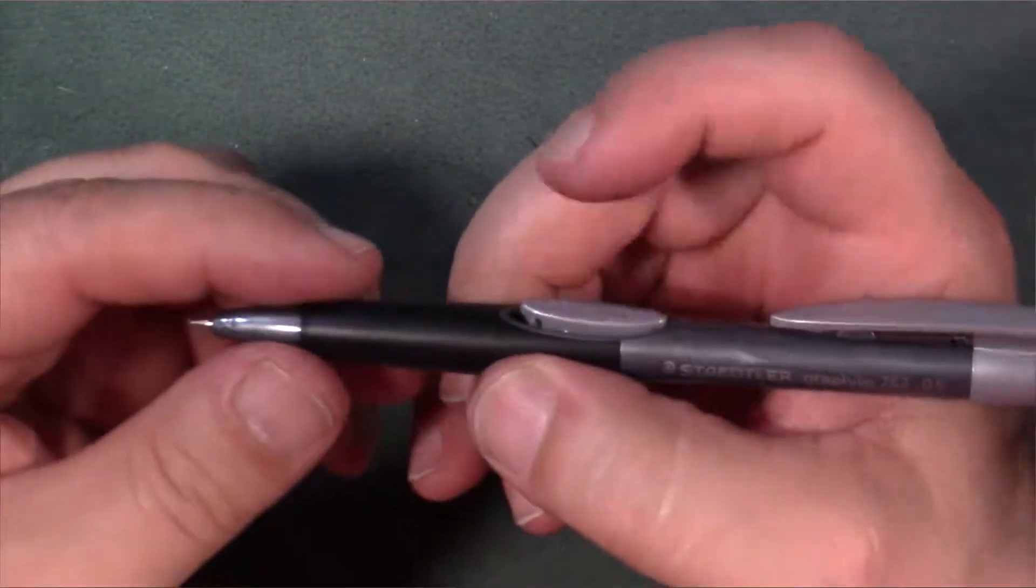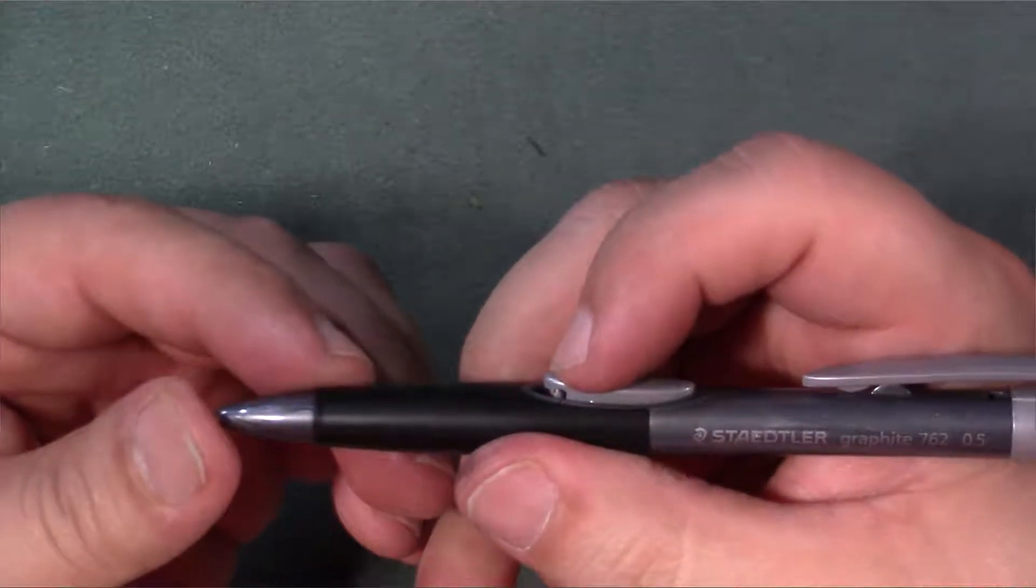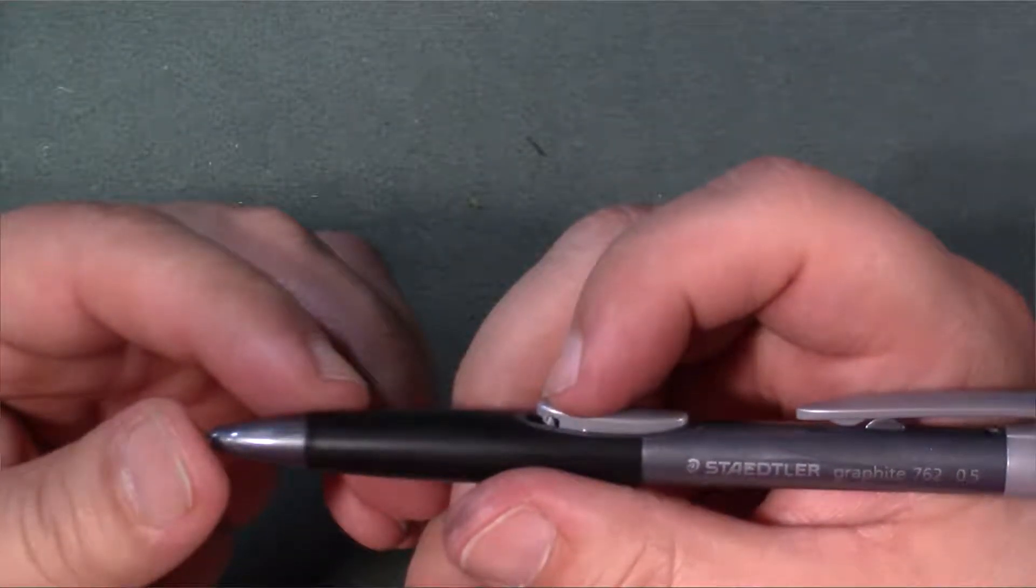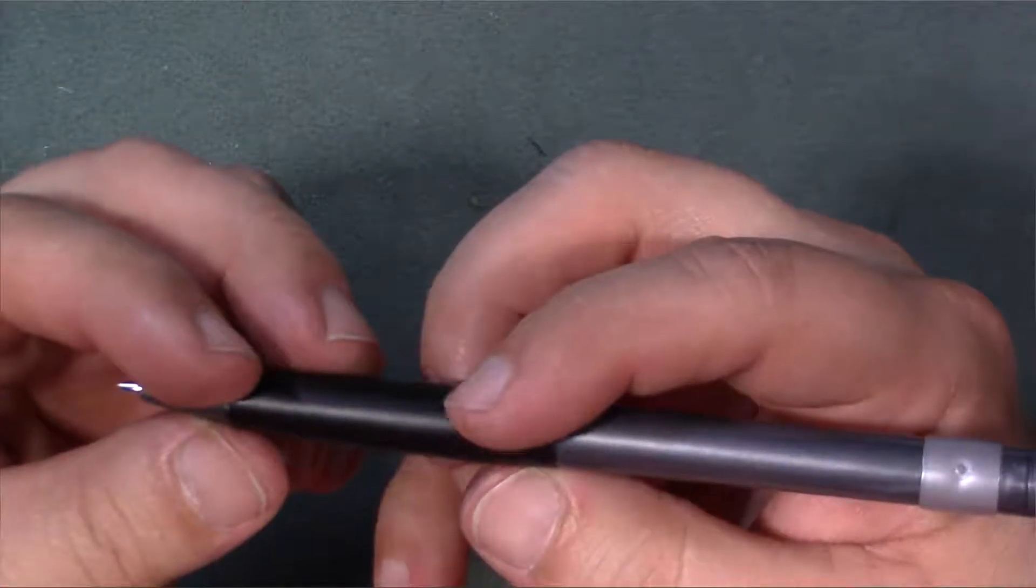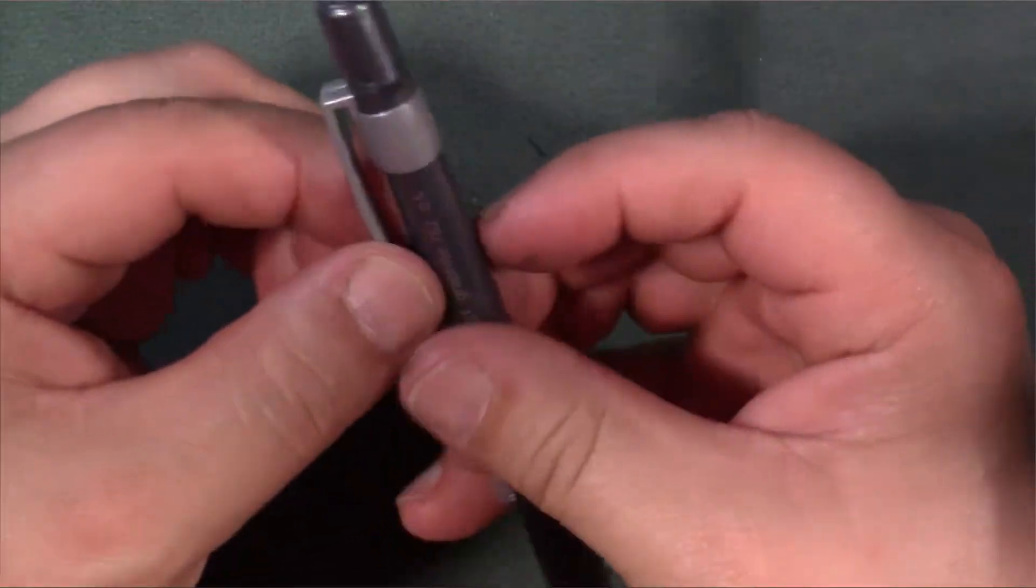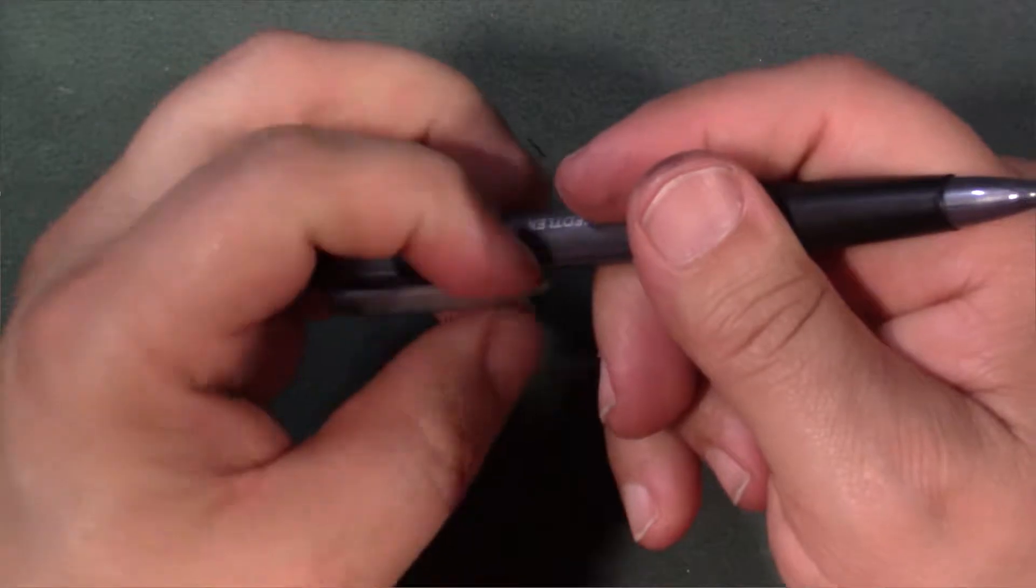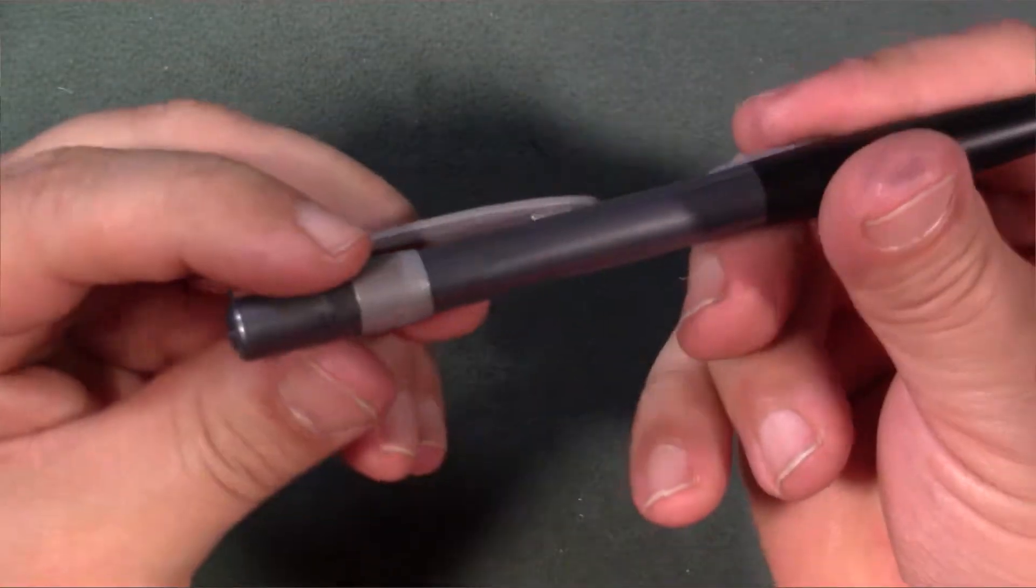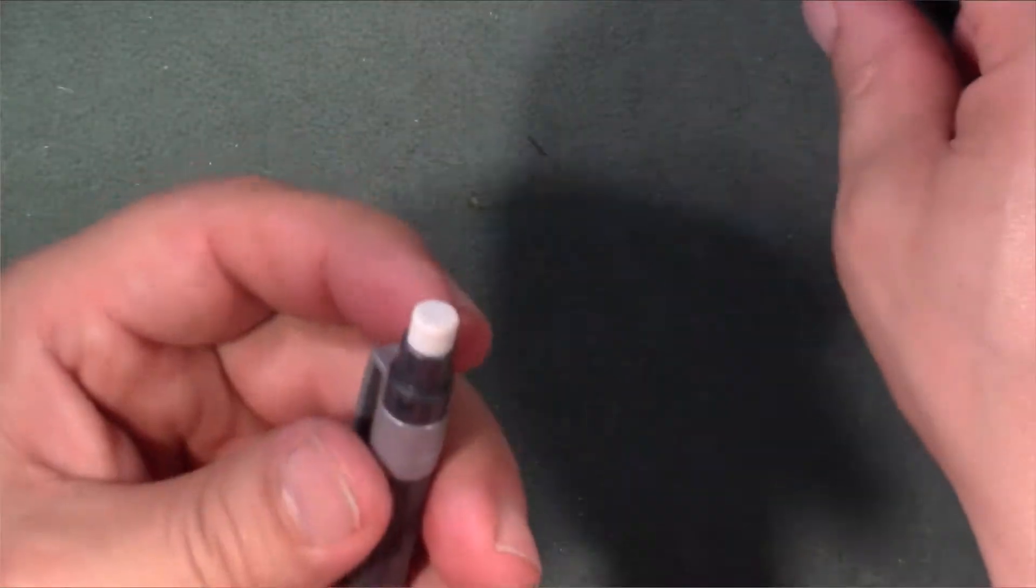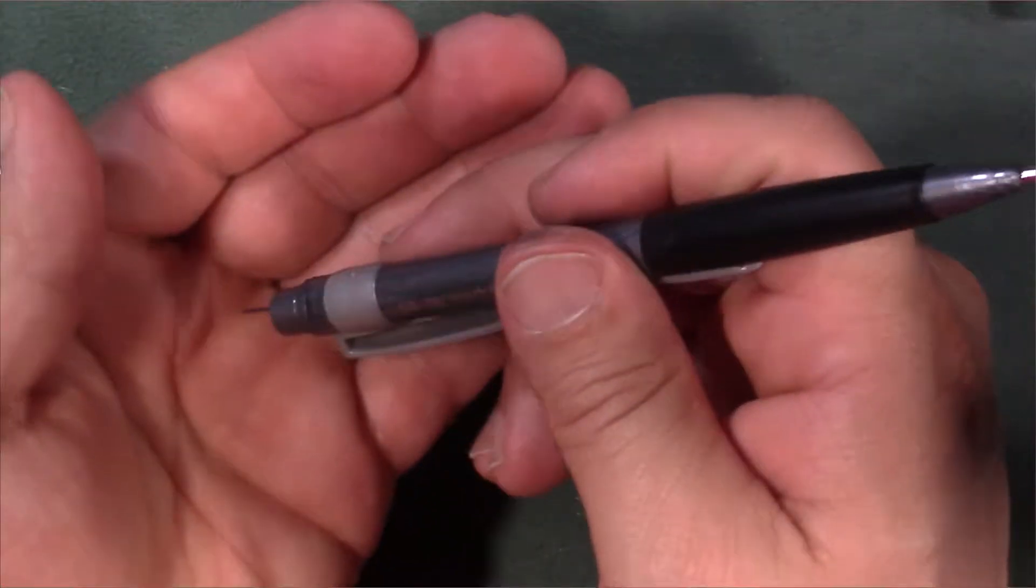Of course, it's got this button on the top here to actually advance the lead forward, and it's actually got some lead in here. This is also a 0.25, and the model number of this mechanical pencil is Staedtler Graphite 762 is the model number. Excuse me. Of course, you got a cheap plastic clip here which I'm not very fan of.